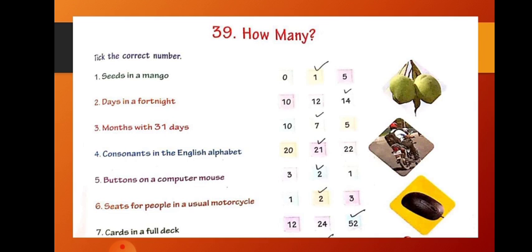Now, third one. Months with 31 days. The options are 10, 7, 5. And the correct option is 7. Because 31 days, that is, January, March, May, July, August, October and December. These seven months have 31 days.